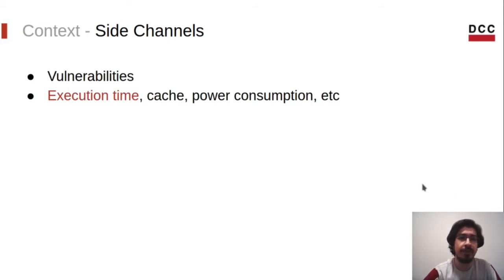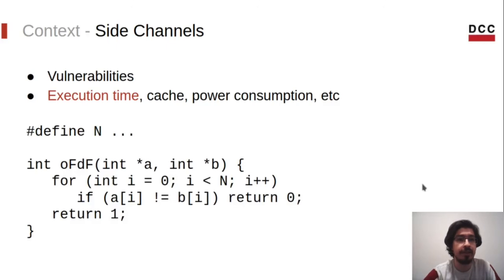In this project, we are interested in the first type - side channels that leak information through the differences on the execution time of a program. For instance, consider this function called OFDF. You may have noted this weird name OFDF - O means operation invariant and D means data invariant. The F stands for false. So in this case, this function is neither operation nor data invariant. This will make sense in a minute.